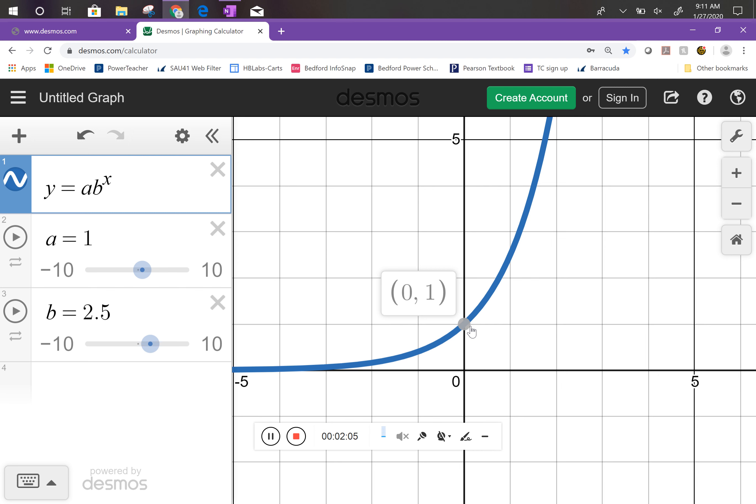All right, so I want you to notice something. See this y-intercept right here? Y-intercepts have been pretty important in stuff that we've studied in the past, right? What's this y-intercept? Look at the graph, what's the y-intercept? Zero, one, right? It goes through the point zero, one. All right, what if I do that? Now what's the y-intercept? Zero, two. Now what if I do this? Zero, four.